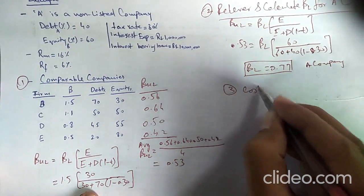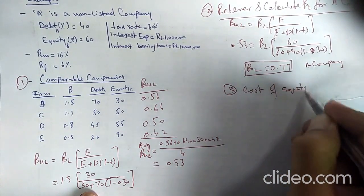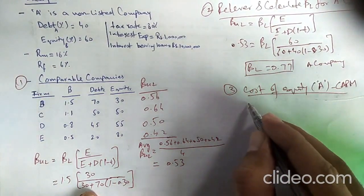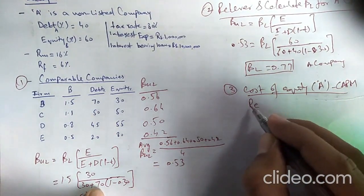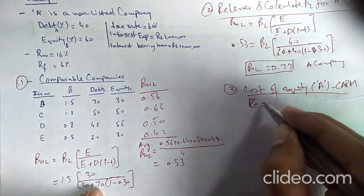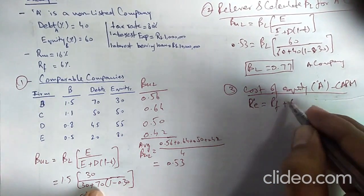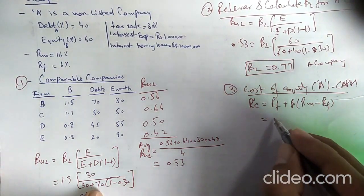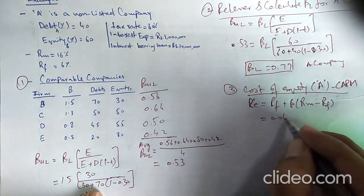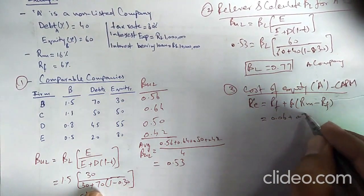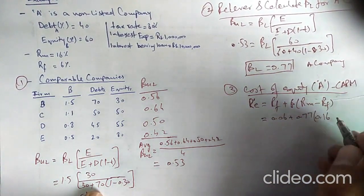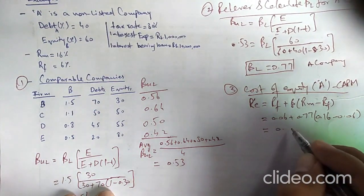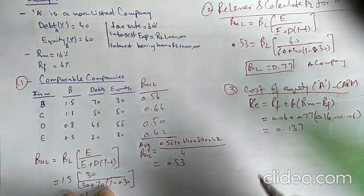At the third stage, I calculate the cost of equity for A company using CAPM. The formula is: KE = RF + Beta_levered × (RM − RF). For A company, RF = 0.06, Beta_levered = 0.77, and RM = 0.16. Solving: KE = 0.06 + 0.77 × (0.16 − 0.06) = 0.137. That's how we calculate the cost of equity for a non-listed company.